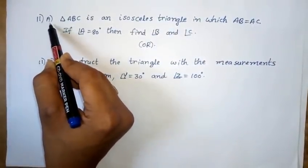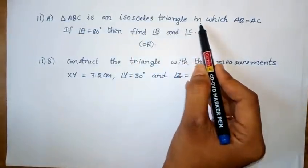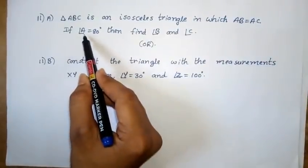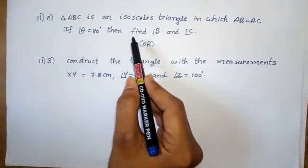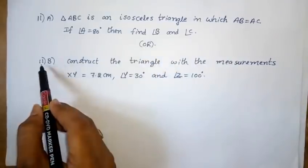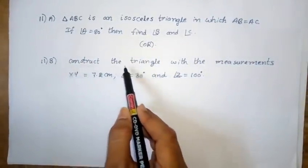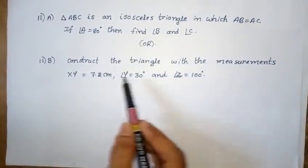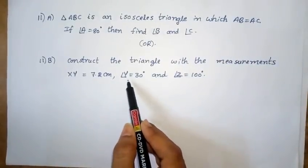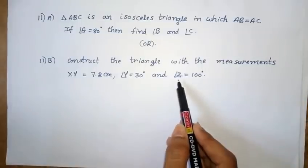Eleventh question Part A: Triangle ABC is an isosceles triangle in which side AB equals AC. If angle A equals 80 degrees, then find angle B and angle C. Or, eleventh question Part B: Construct a triangle with measurements XY equal to 7.2 cm, angle Y equal to 30 degrees, and angle Z equal to 100 degrees.